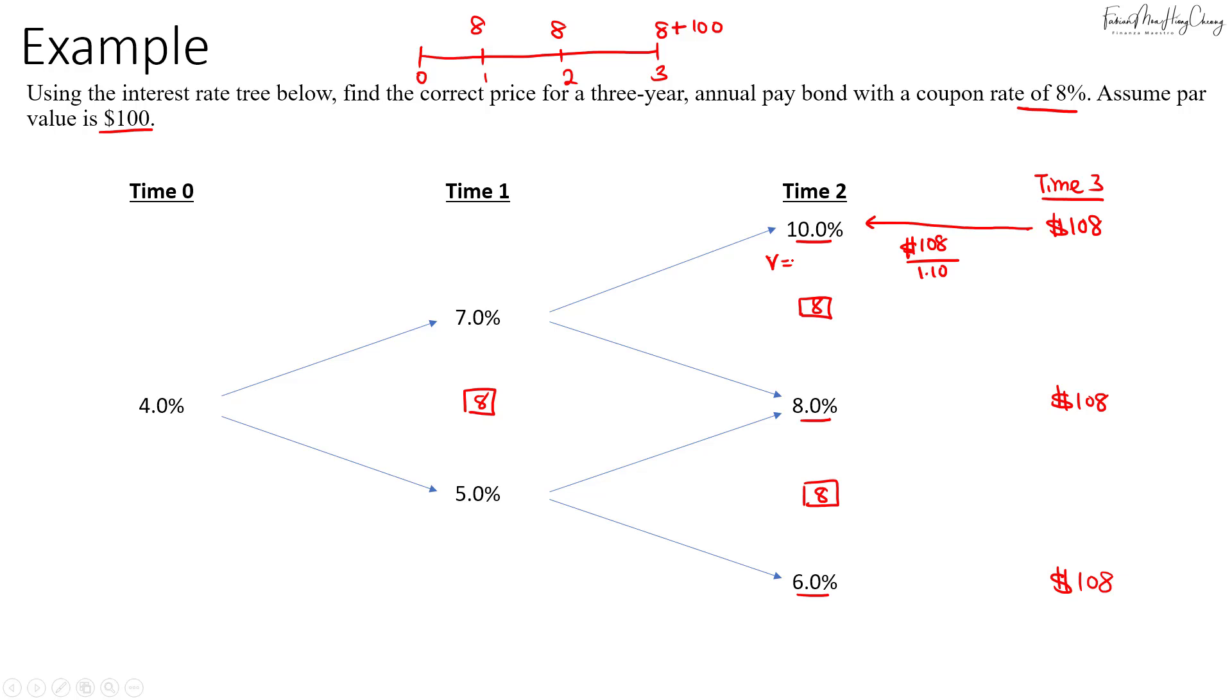Then for the next $108, if I discount it at 8%, that will give us $100. Then for the last cash flow, if I discount it back at 6%, that will give us V equals 101.887.